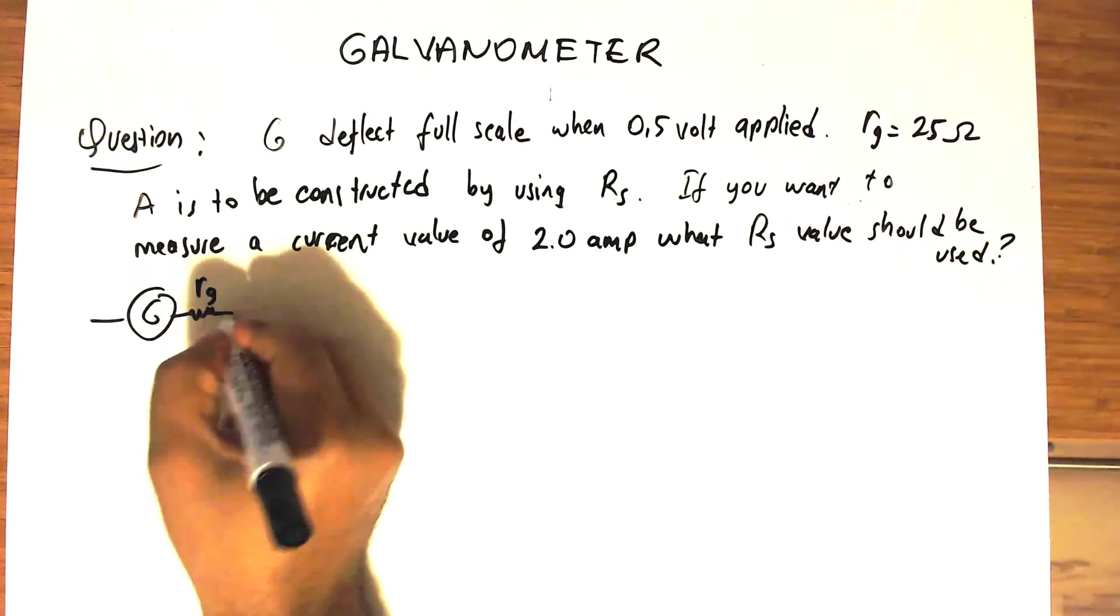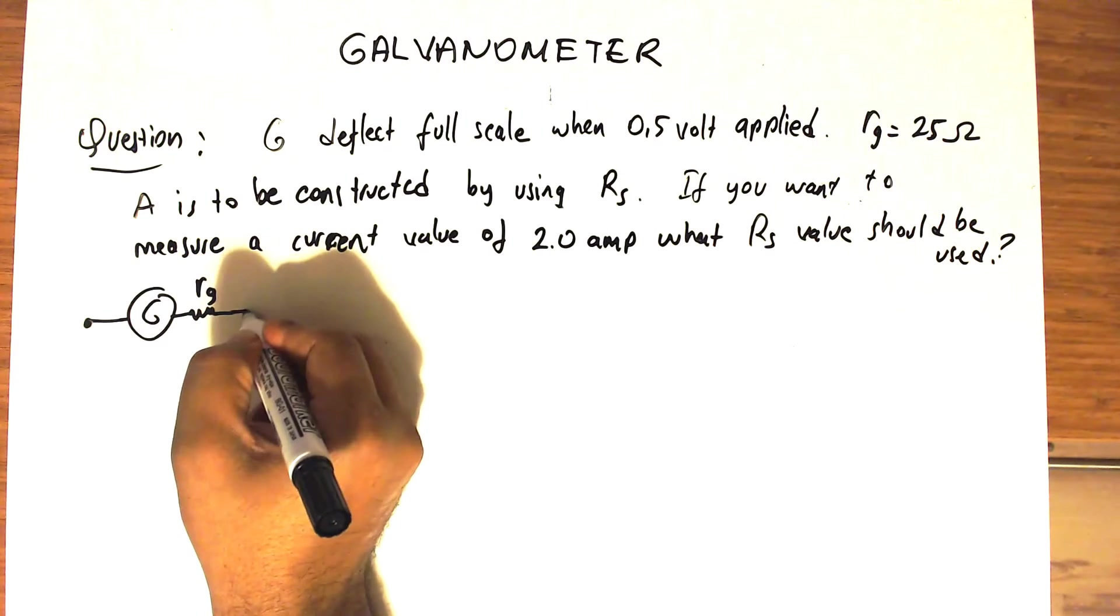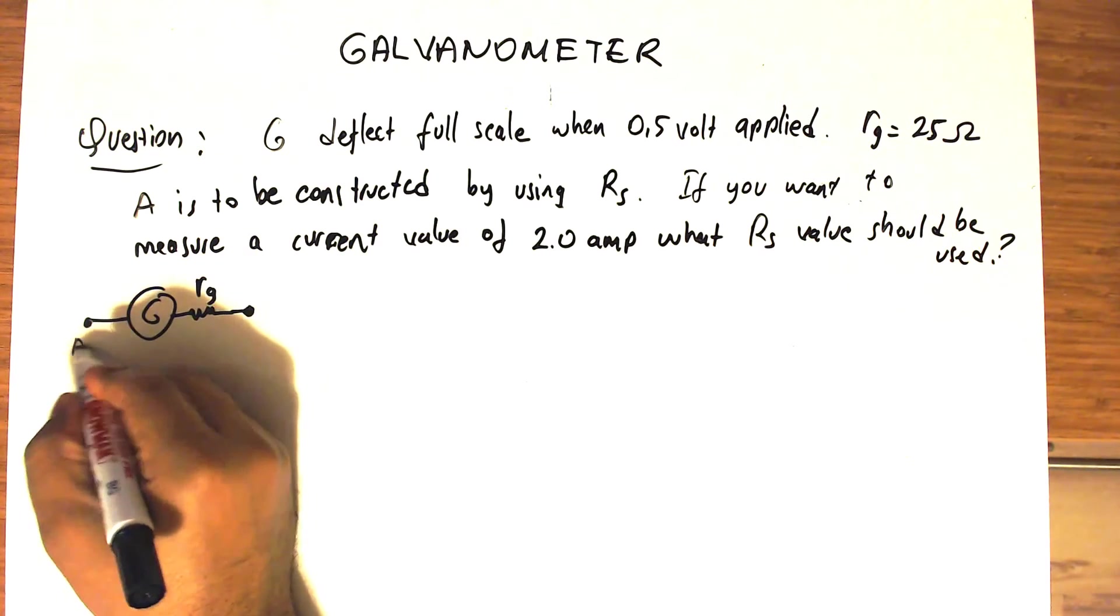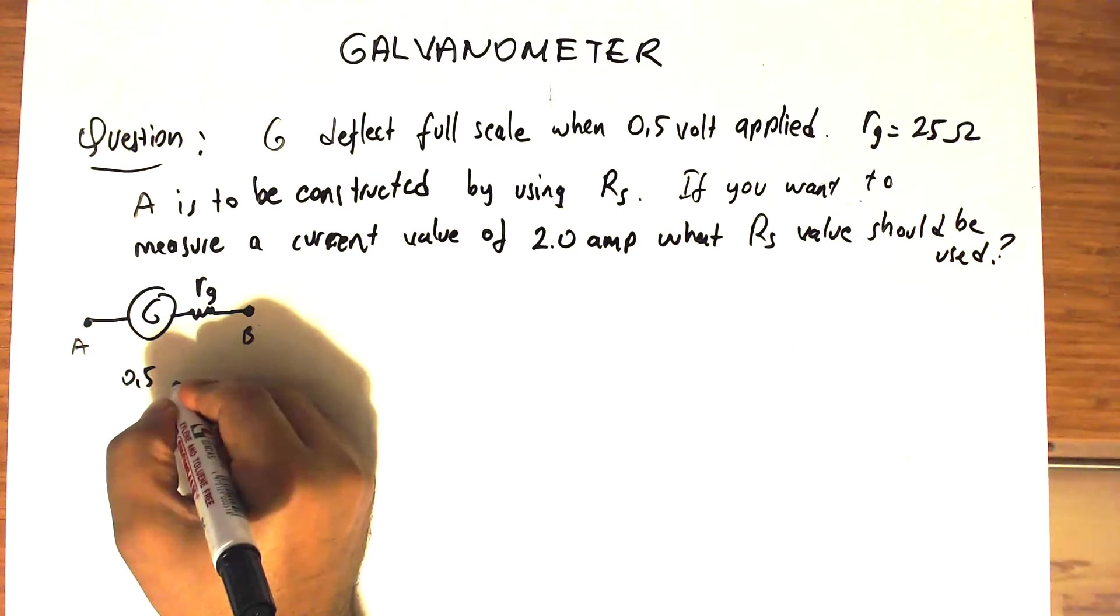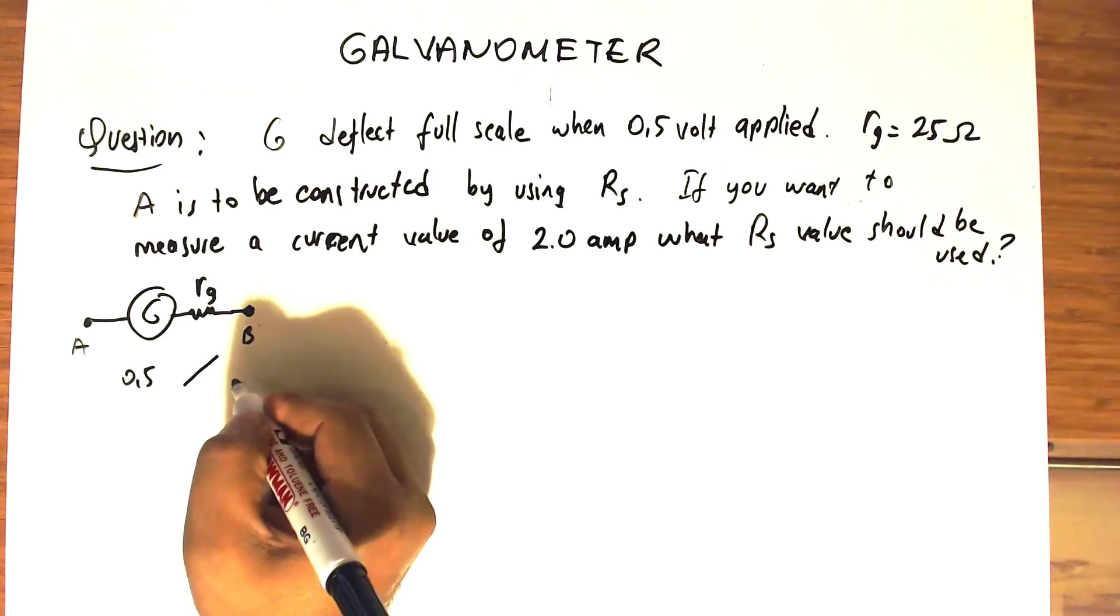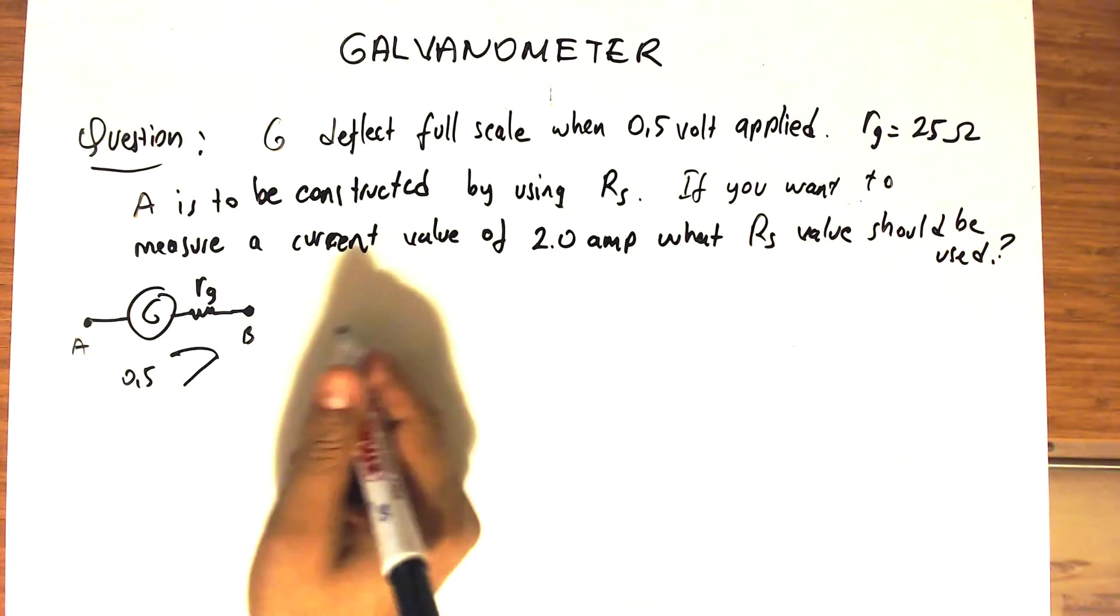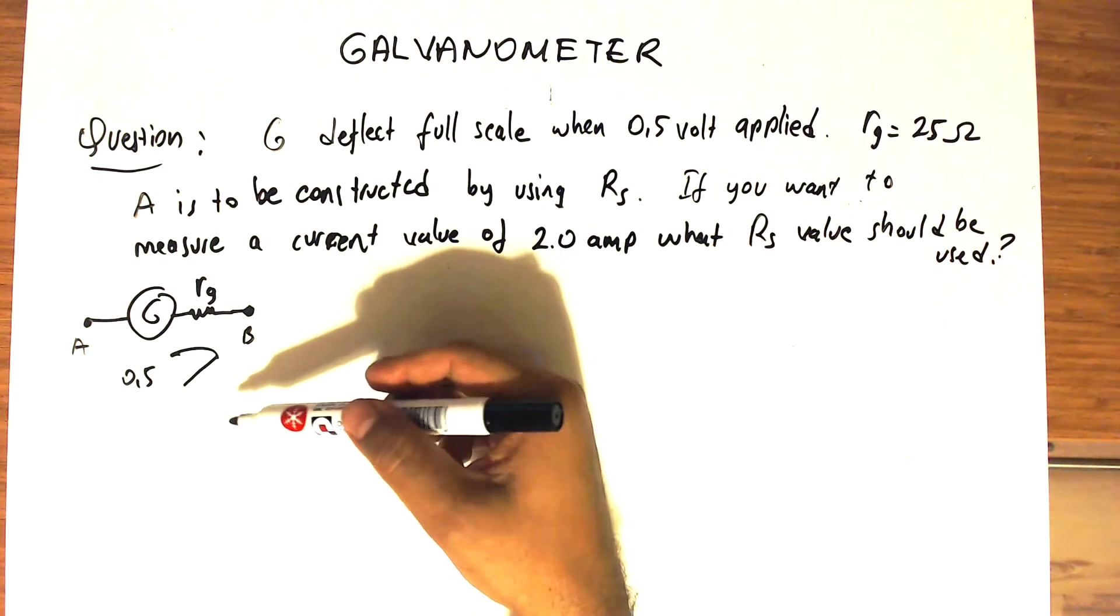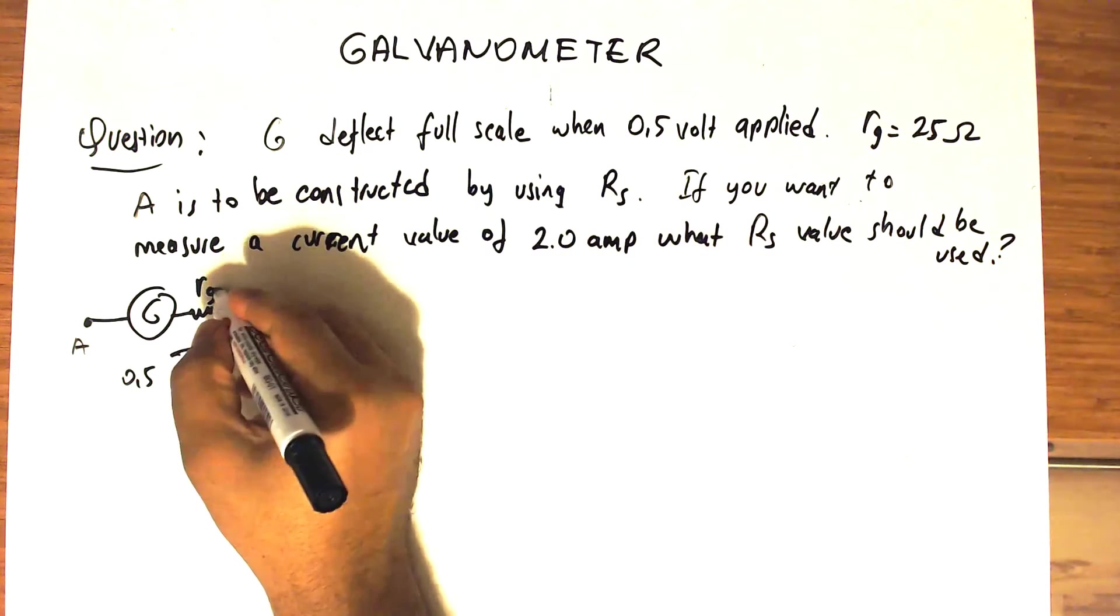The problem says if you apply 0.5 volt to the terminals of this galvanometer, the galvanometer will deflect to the maximum value. So this is a given parameter for this problem, and Rg is given as 25 ohms.